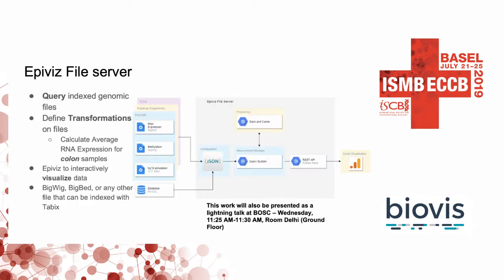Another thing I worked on the data side was the file server. A lot of genomic data repositories like ENCODE or Roadmap Epigenomics contain many publicly available datasets as files. We wanted to let you query those files directly without downloading them. You can also define transformations over these files — for example, if you have a dataset with many samples in colon tissue, you can calculate the average RNA expression across all those samples on the fly based on the genomic range you're interested in. We currently support BigBed, BigWig, or any other index file format that can be indexed with Tabix.